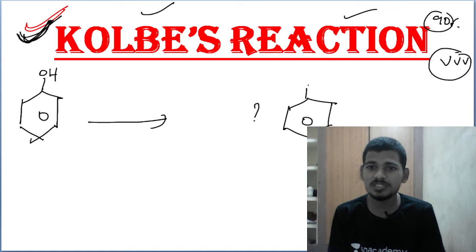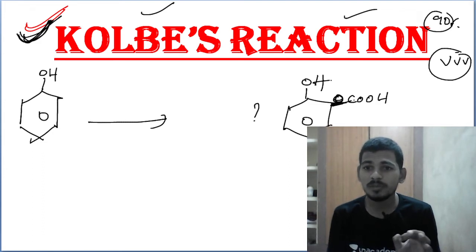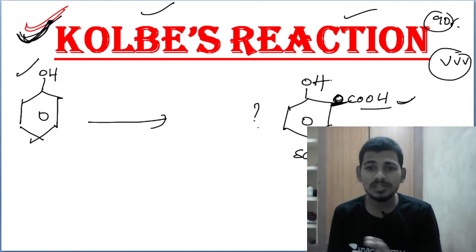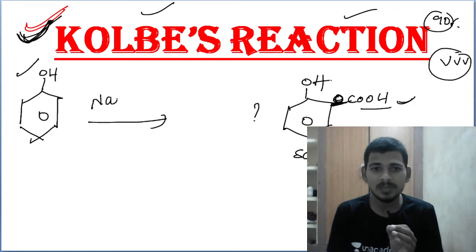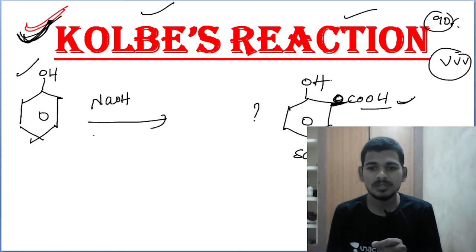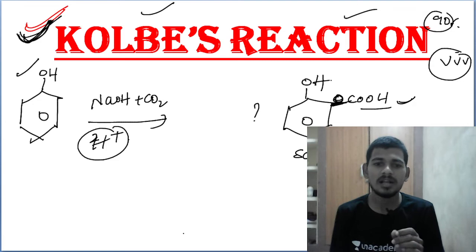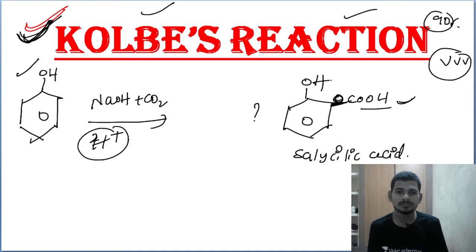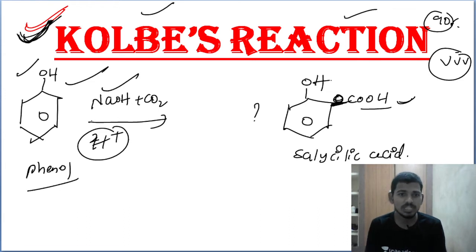This is the structure of salicylic acid. This is phenol, and this is the structure of salicylic acid — very very important. It is visible clearly. The first reagent for phenol is NaOH — NaOH is the base.